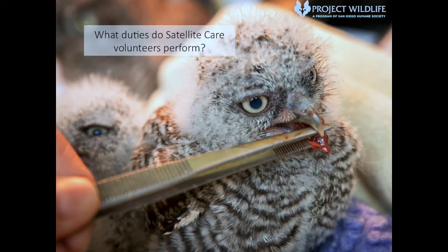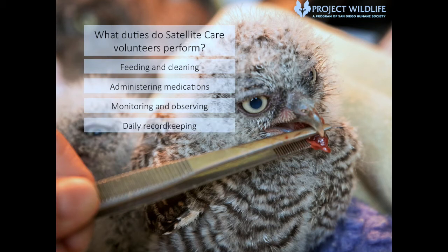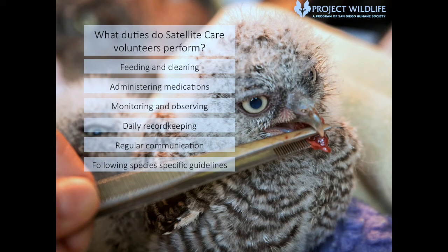Satellite care volunteers perform many duties within their role. You will be feeding and cleaning animals multiple times a day, providing a proper environment and nutrition specific to the species you are caring for, administering medication and treatment on an as-needed basis, and providing basic emergency care while recognizing and treating possible life-threatening conditions. You will be carefully monitoring animals to ensure proper health and behavior, updating paper and electronic medical records daily, taking part in regular communication with a satellite coordinator, team leader, and fellow team members regarding treatments, supplies, and general care, following guidelines in the species team protocol at all times, and always being caring, patient, and committed to helping wildlife in need and keeping them wild.